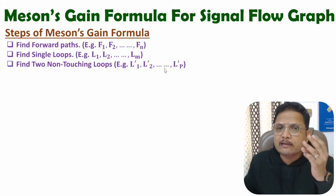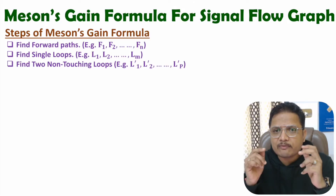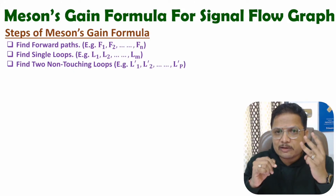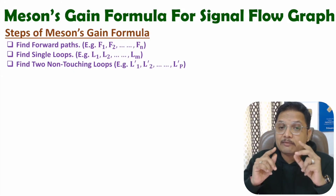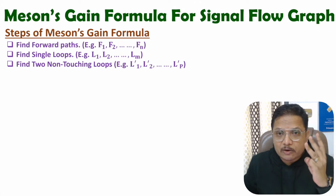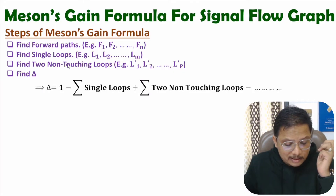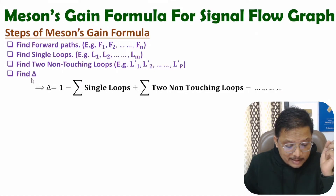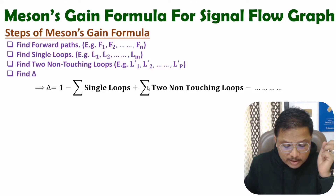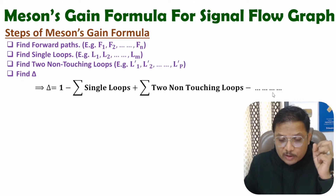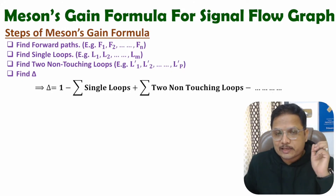After that, we will be identifying three non-touching loops. Usually we don't have signal flow graphs with three non-touching loops, but if available, we identify them. Based on single loops, two non-touching loops, and three non-touching loops, we can identify delta. Delta is 1 minus summation of single loops, plus summation of two non-touching loops, minus summation of three non-touching loops, plus summation of four non-touching loops.